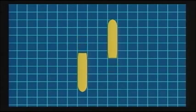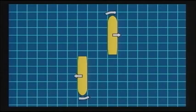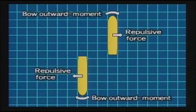When the sterns of the two ships pass each other, these effects are transformed into repulsive force and bow outward moment.